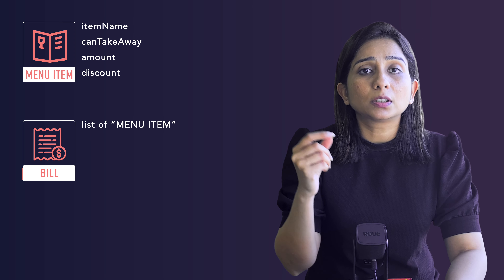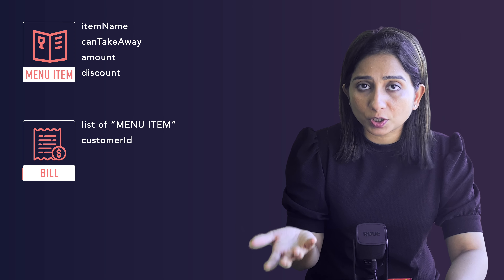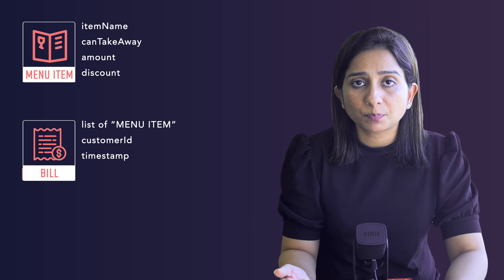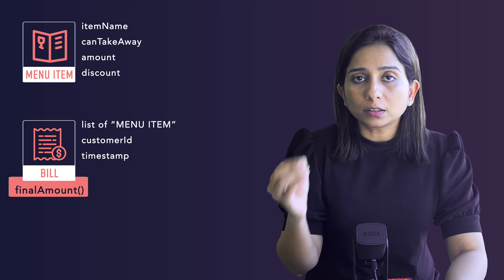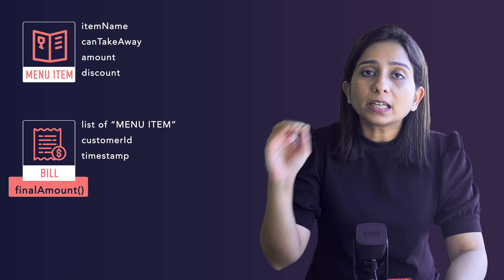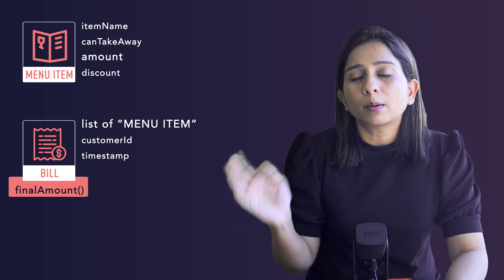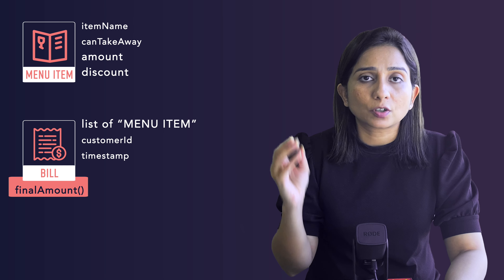Let's say there is a small restaurant app where we have a class called MenuItem. This class has the name of the item, whether the item is available for takeaway, the amount, tax, discount, etc. There is another class called Bill which can consist of a list of these items, the customer on whose name the bill has to be generated, timestamp, and other properties. The responsibility of the Bill class is to calculate the final amount — it goes over all items, gets their prices, applies discounts, and returns the final amount.